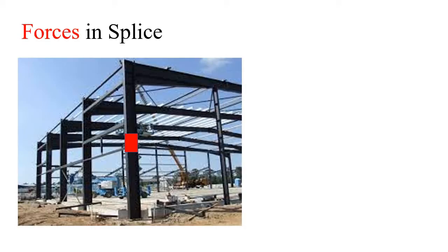Consider this particular portal frame. This is the steel column — this is part one and this is part two. The red colored box shown here is the splice being used to connect these two different parts of the column. All the forces carried by the upper part of the column are transferred to the lower part through this splice. To design this splice, you have to take into consideration all the forces.